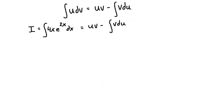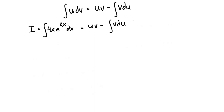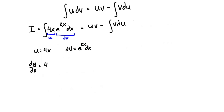When solving integrals with integration by parts, we don't start with u and v already defined — we assign them. We define part of the integrand as u (something easy to differentiate) and the rest as dv (something easy to integrate). Here, let's take u = 4x and dv = e^(2x) dx. Then du/dx = 4, so du = 4 dx.